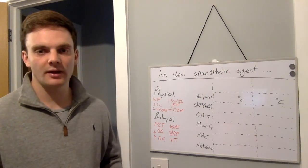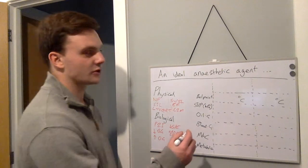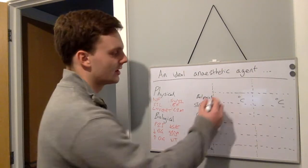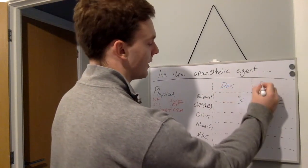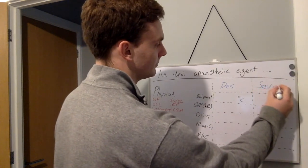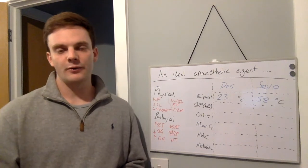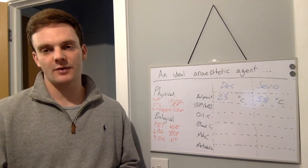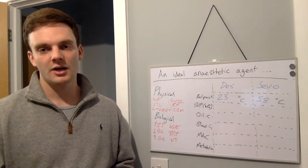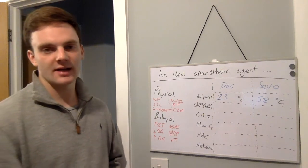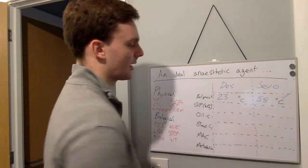So now we can compare the properties between two commonly used anaesthetic agents, desflurane and sevoflurane. So if we firstly look at the boiling points of desflurane and sevoflurane, we will find that sevoflurane has a more ideal boiling point compared with desflurane.